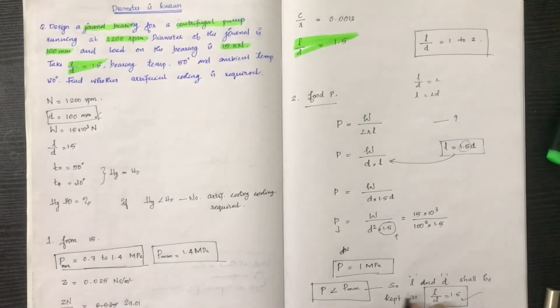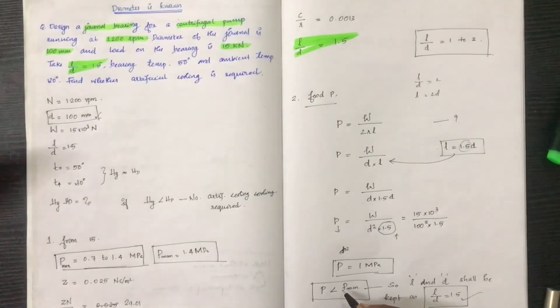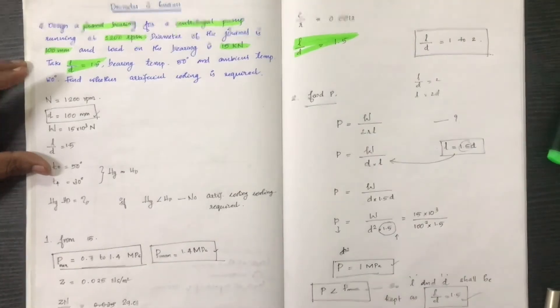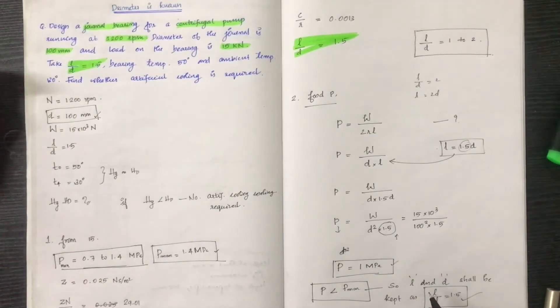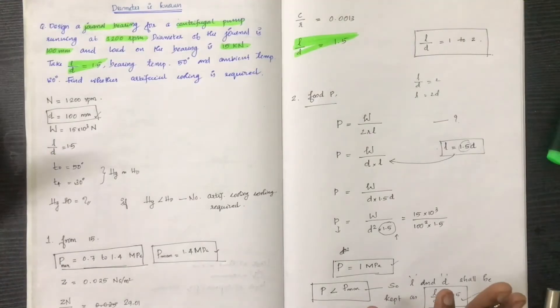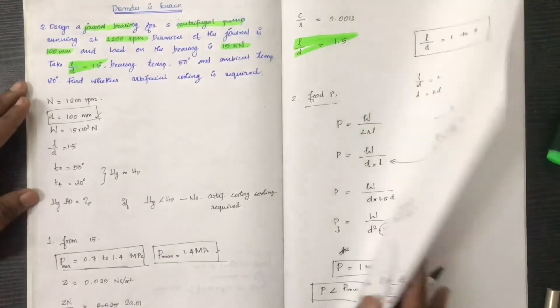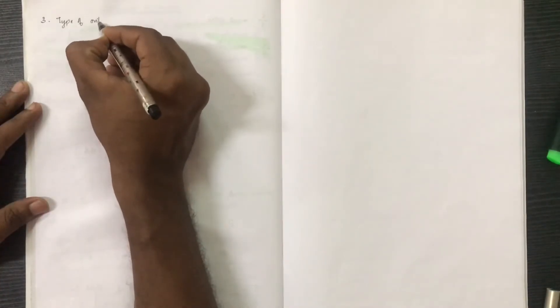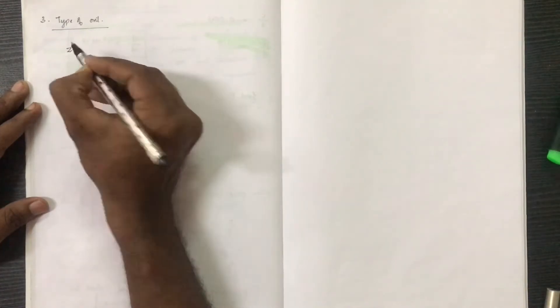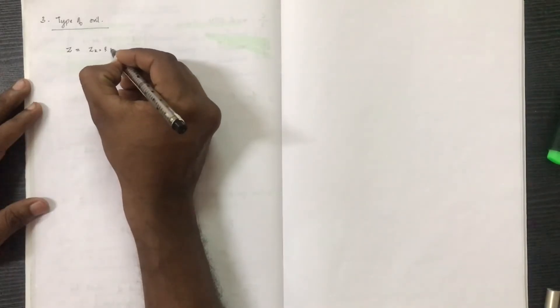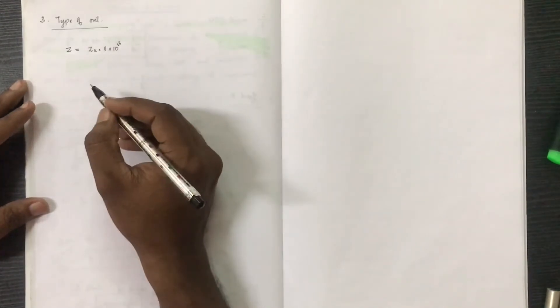L by D is equal to 1.5. Now we select the type of oil. The viscosity is 7.0 × 10⁻³ to 4.0 × 10⁻³ Pa·s, using the SAE method.